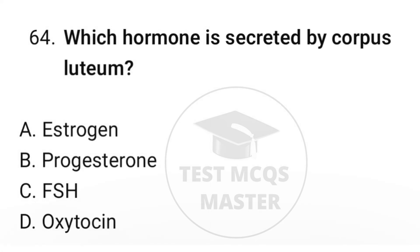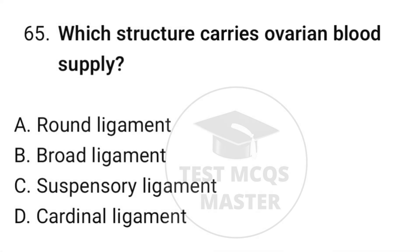Question number sixty-four: which hormone is secreted by the corpus luteum? The correct option is B, progesterone. Question number sixty-five: which structure carries the ovarian blood supply? The correct option is C, suspensory ligament.